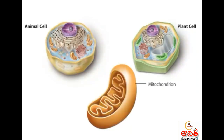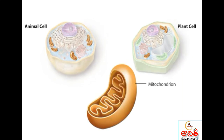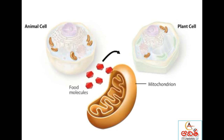Mitochondria are found in almost all eukaryotes, including plants and animals. Mitochondria are the cell's power plants. They carry out critical steps in the extraction of energy from food, converting it into a more usable form of energy.